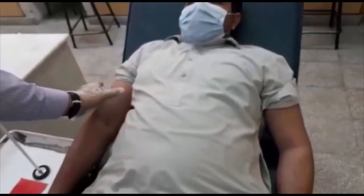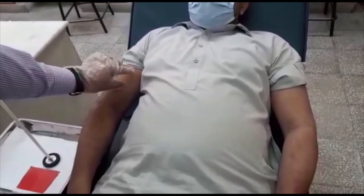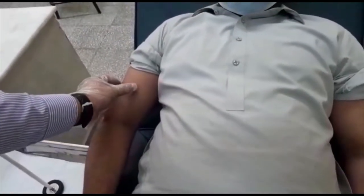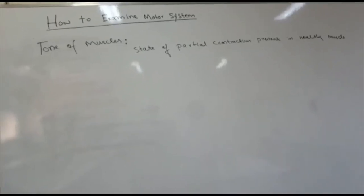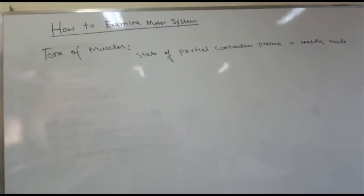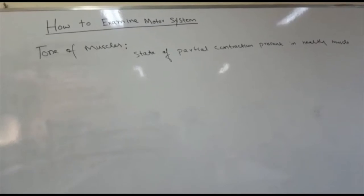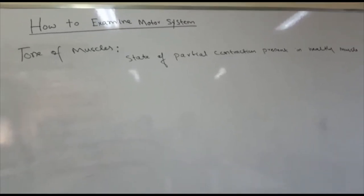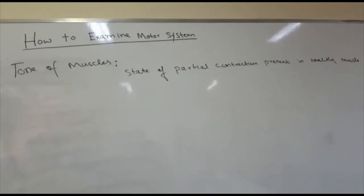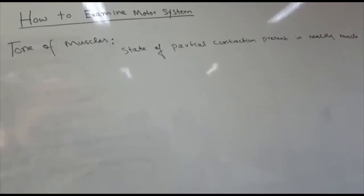You can fix a point and compare the two sides. We measure the circumference of the arms 5 inches above the elbow joint and 4 inches below the elbow. Then 9 inches above the knee joint and 6 inches below the knee joint. These are the specific reference points. Then we proceed to tone of muscles.